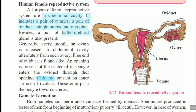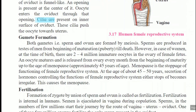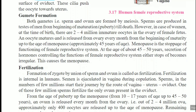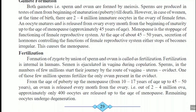Oocytes enter the oviduct through that opening. Cilia are present on the inner surface of the oviduct — cilia are hair-like projections — and they push the ovum forward. This is the structure of the human female reproductive system and the process of ovum formation. The next point related to this is gamete formation.